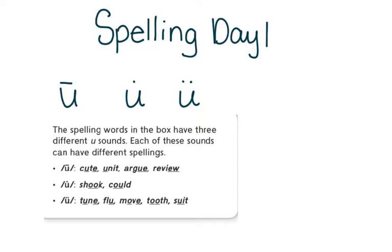We are looking at a long U, and we've already talked about what that looks like. Long U, as in cute, unit, argue, review. Mostly you can see there's a U with a consonant in between, an E — just U, U-E, and E-W. So these can make the long U sound, and U just says its name: cute. You hear the U sound.